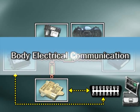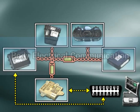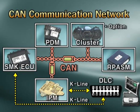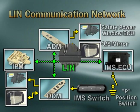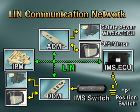The Body Electrical Communication Network System of Sorento has different network systems depending on the optional specifications. If the button starting system is applied, the CAN communication network is adopted. And if the IMS is applied, the LIN communication network is adopted.